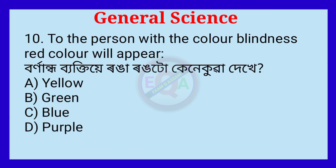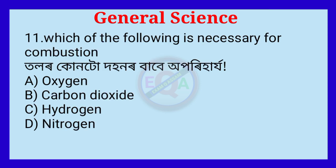Question number 10. To a person with color blindness, red color will appear as — correct answer: green.